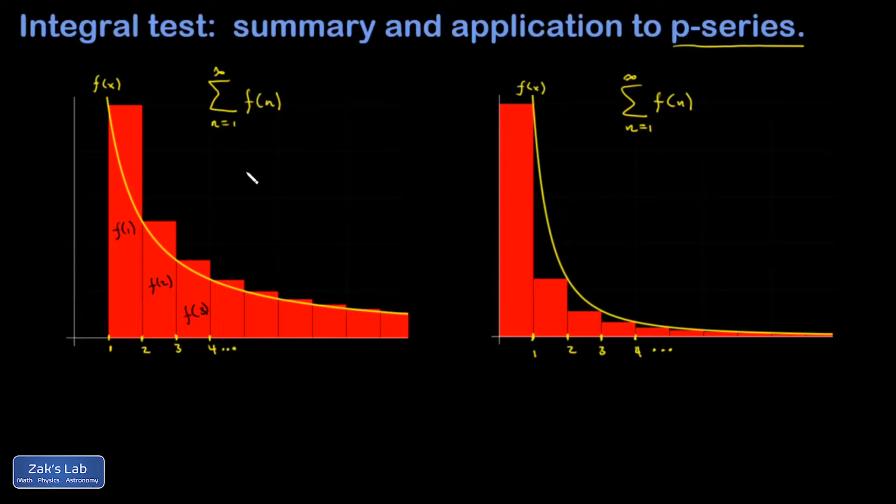It's going to be an area bigger than the area bounded by my curve. And so this is going to be bigger than the integral from 1 to infinity of f of x dx. And what I'm hoping here is that this integral blows up to infinity, thereby proving that the series blows up to infinity. So this is how we would prove divergence.